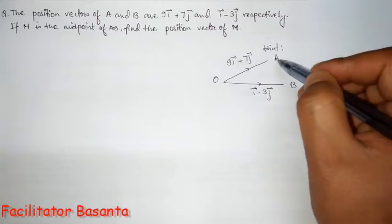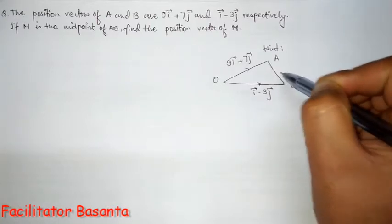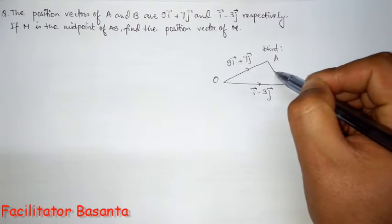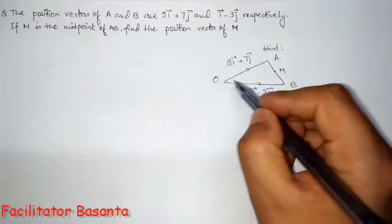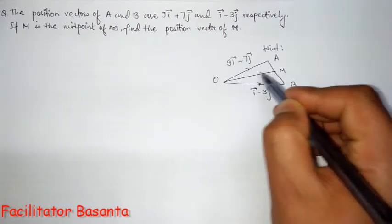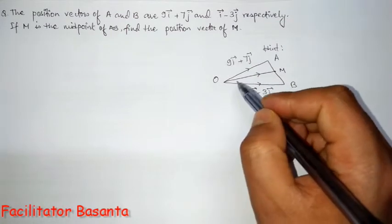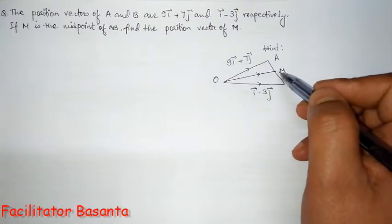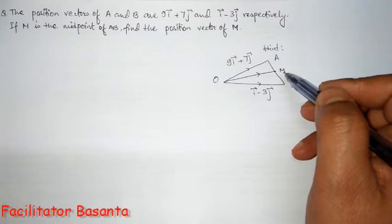If M is the midpoint of AB, let us suppose this is the point M. Then we need to find the position vector of M. As M is the midpoint, we can apply the midpoint formula.